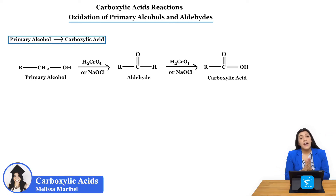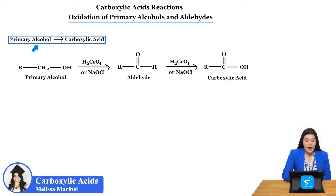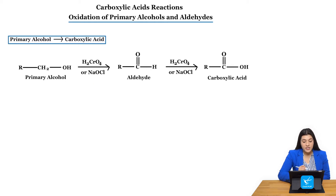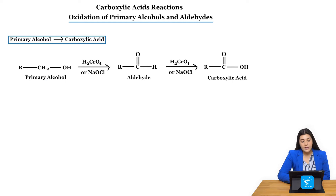The first type of carboxylic acid reaction we'll go over is oxidation. We're specifically looking at a primary alcohol and oxidizing it all the way to a carboxylic acid. We can use either one of these oxidizing agents. Starting with our primary alcohol, if we use something a bit weaker, that will allow us to get to an aldehyde.